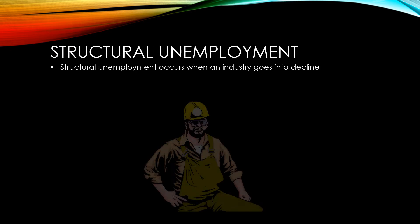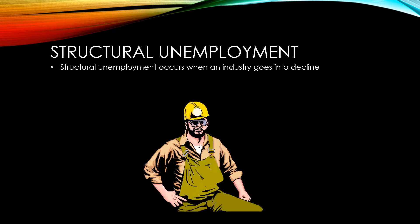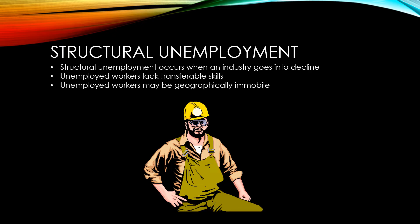Structural unemployment occurs when an industry goes into decline. The unemployed workers from that industry may lack transferable skills that can be applied to jobs that are available in their area. Unemployed workers may also be geographically immobile. This might be because they've got ties to the area through their family, or it might be because the property is not worth enough to allow them to sell up and move somewhere else. When structural unemployment occurs and an industry goes into decline, the area suddenly has a lot of people who are unemployed, spending less in the economy, with knock-on effects for all the other businesses in the area.